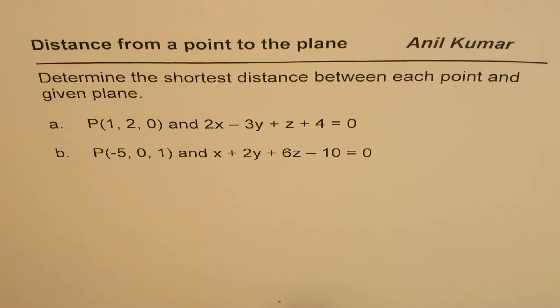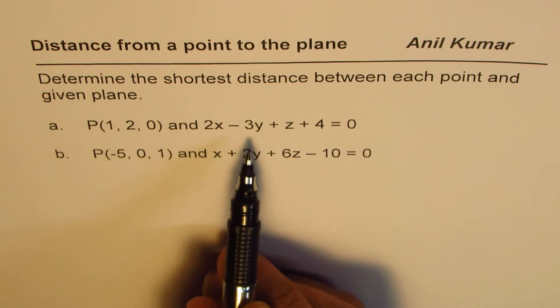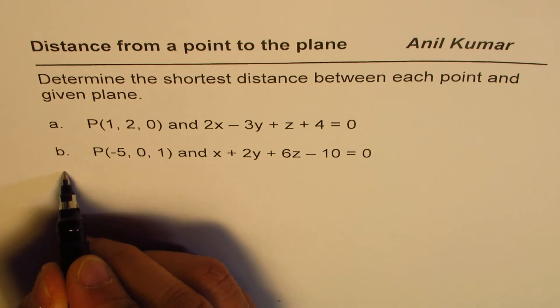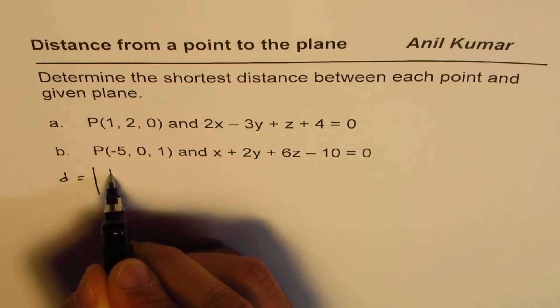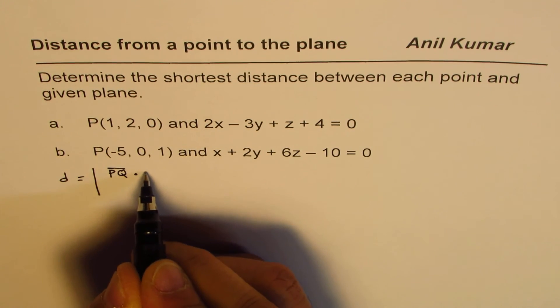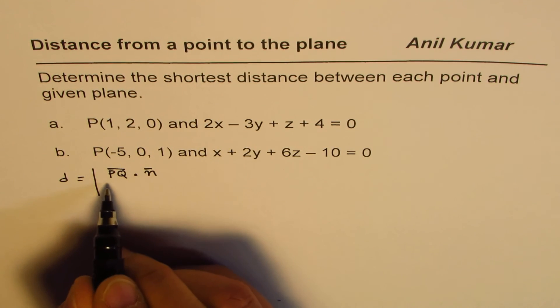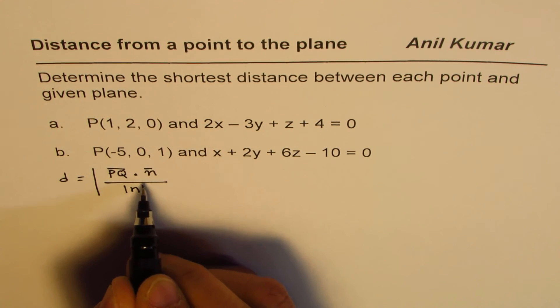Now in the books, we are having two ways of finding distance from a point to a plane. One of the methods is that the distance d equals the absolute value of pq dot n, where n is the normal to the plane, divided by the magnitude of n.